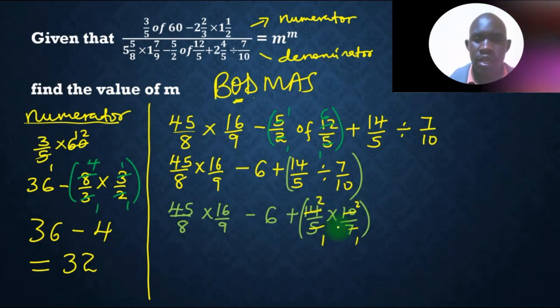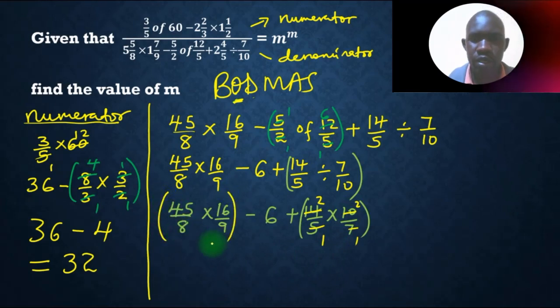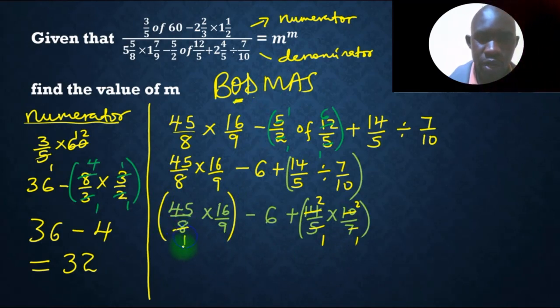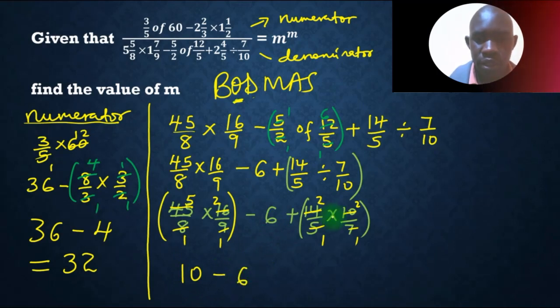So 2 times 2, that is 4. Also we have the other part, whereby we can deal with, which is multiplication. By 8, 1, by 8, 2, then by 9, 1, by 9, we have 5. So 5 times 2, that is 10, then minus, we have 6, then plus, 4.